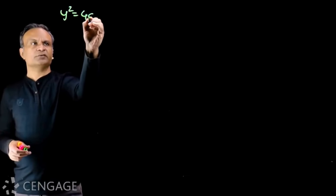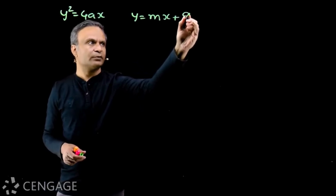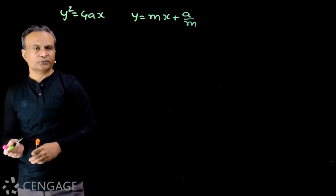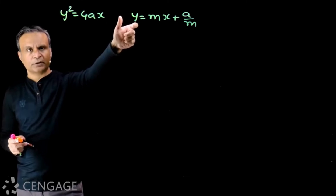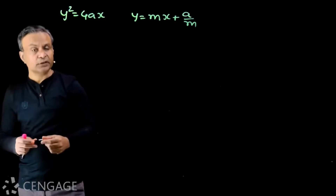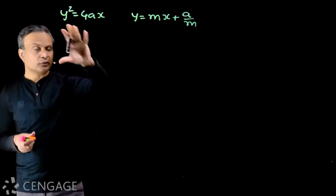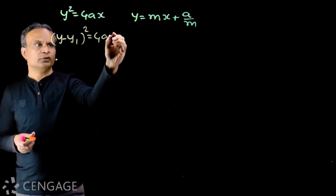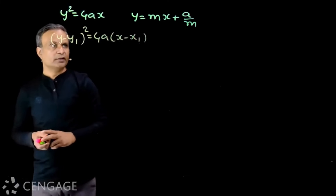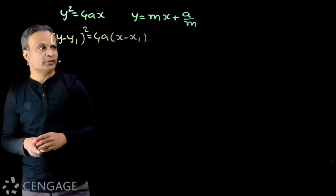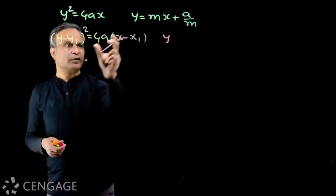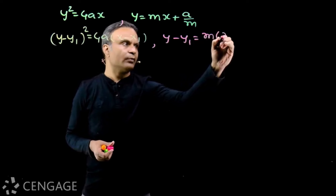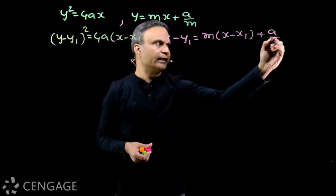The equation of a tangent to the parabola y² = 4ax having slope m is y = mx + a/m. The vertex of this parabola is the origin (0, 0). If the vertex of the parabola is shifted to point (x₁, y₁) by translation — not rotation — the equation of the parabola becomes (y minus y₁)² = 4a(x minus x₁), and the equation of the tangent with slope m becomes y minus y₁ = m(x minus x₁) + a/m.